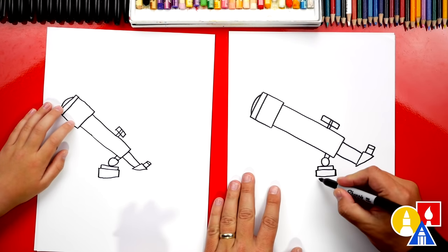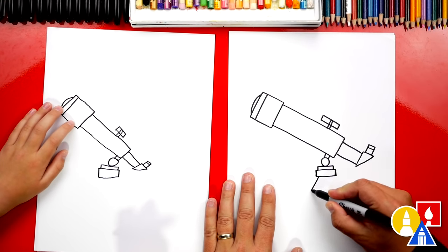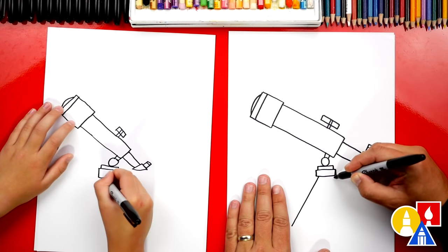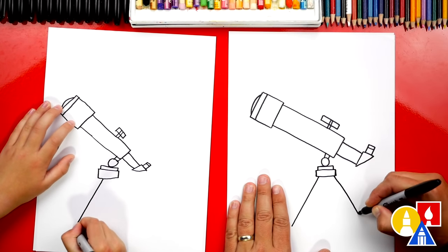Now let's draw the legs to our tripod. We're going to draw a diagonal line coming down to the left. And then we're going to match that same diagonal line coming down to the right.